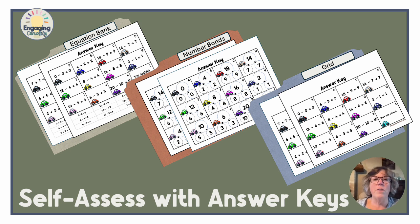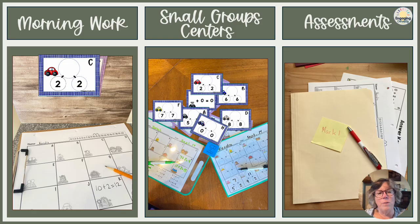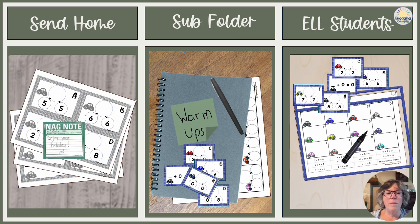Each set of task cards presents the equations and number bonds in a different order, providing ongoing challenge and preventing students from just memorizing what number goes in each square. Each original set also comes with all the unique answer keys. I love Write the Room activities — these are great for morning work, small group centers, and assessments. The black-and-white versions are great to photocopy and send home for vacation, recovery days, or use in a sub folder, especially if students already know how to do the activity.